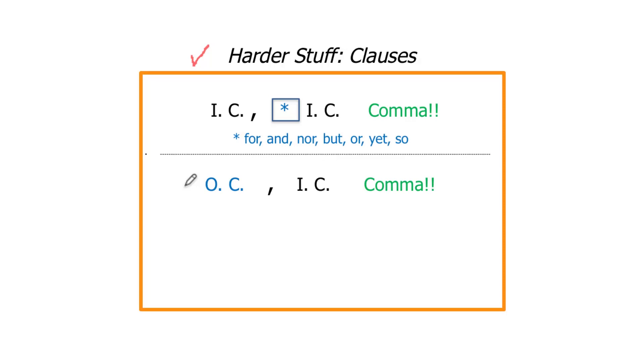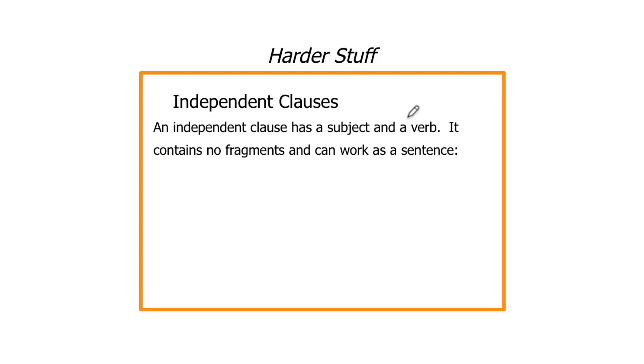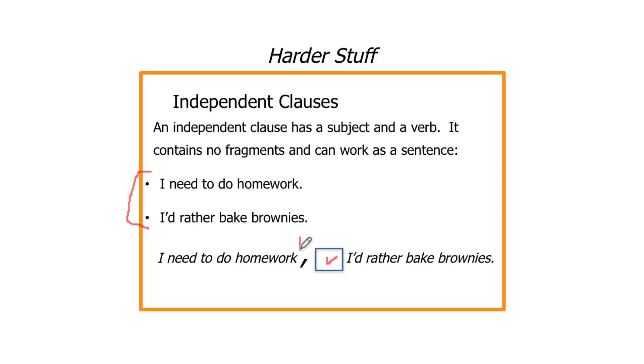An independent clause has a subject and a verb. It contains no fragments, and it can work as a sentence on its own. Check out these two independent clauses. We've got 'I need to do homework' and 'I'd rather bake brownies.' These are both independent clauses. They can work as their own sentences, but because they're kind of short, we often do like to combine them. What word, if you were going to put a word in between these two and make this all into one sentence, what word might you choose? It's pretty likely that you chose a word that is considered one of the coordinating conjunctions. The order is going to be independent clause, comma, coordinating conjunction, independent clause, period.